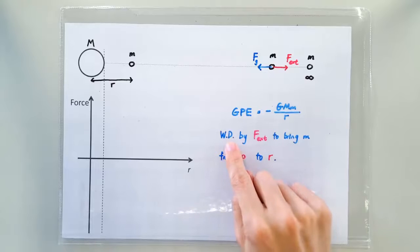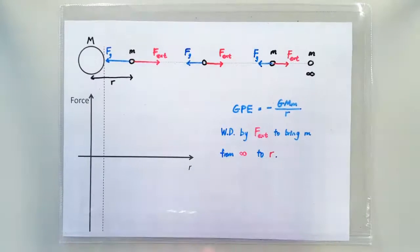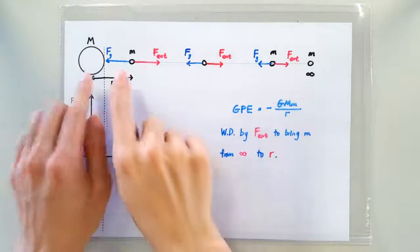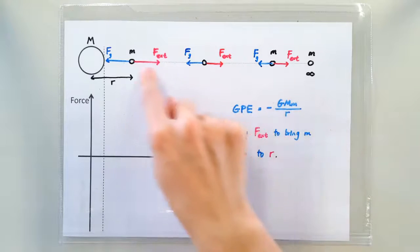So should we evaluate the work done as simply the force times the distance? No, we can't do that because the gravitational force follows the inverse square law. So as the mass is moved towards the big mass M, the gravitational force also gets stronger and stronger.